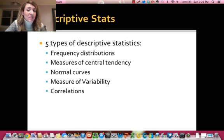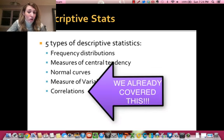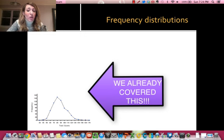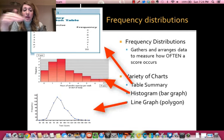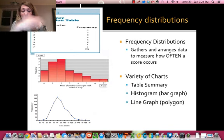So there's five types of descriptive statistics, and a lot of them you've seen before. So we're going to go over all five. The first one is a frequency distribution. A frequency distribution just gathers and arranges the data to measure how often a score occurs. There's a couple of different ways you can make a frequency distribution. You can make a table, which is this one at the top. You can make a bar graph, which is the middle, or a line graph. And all I do is I write the frequency on one side and the other data point. I'm looking at a number of hours a week of aerobic exercise or test scores, and I just plot it out, and then I either do a bar graph or a line graph.